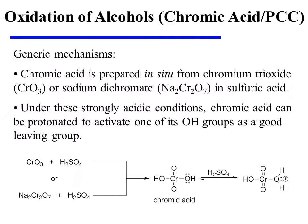Chromic acid is typically prepared in situ from chromium trioxide or sodium dichromate in sulfuric acid. Under these strongly acidic conditions, chromic acid can be protonated by sulfuric acid to activate one of its hydroxyl groups as a good leaving group.